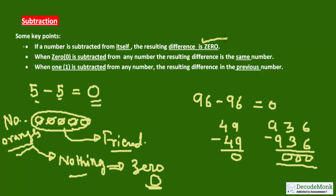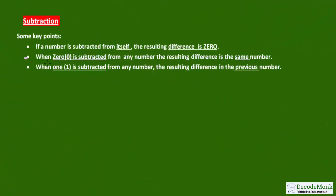So the fact is that if a number is subtracted from itself, the resulting difference is always 0. The next point is: when 0 is subtracted from any number, the resulting difference is the same number. It means 5 minus 0 equals 5.